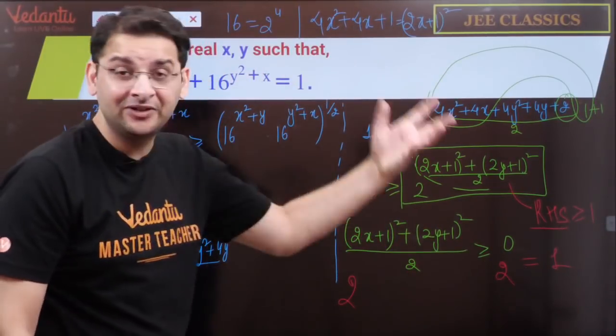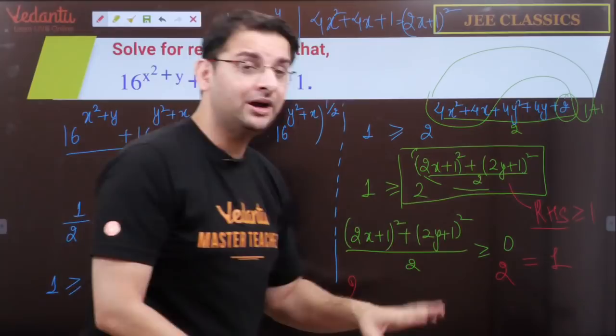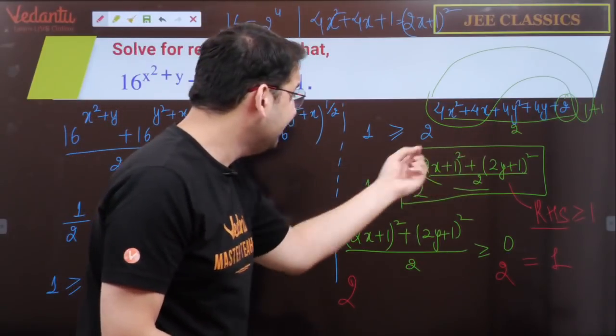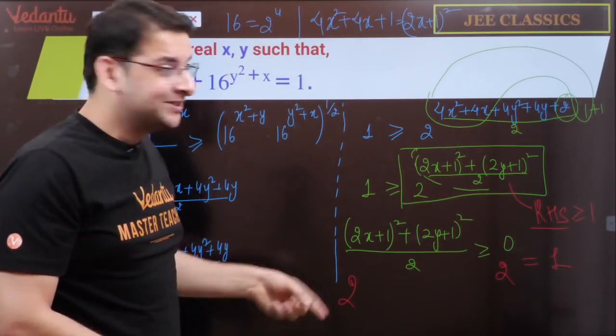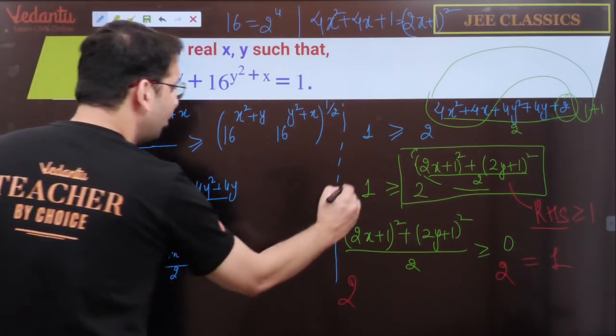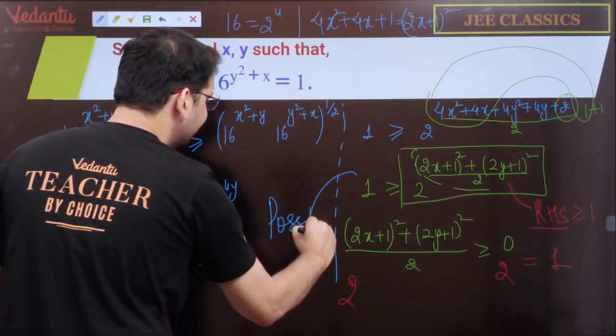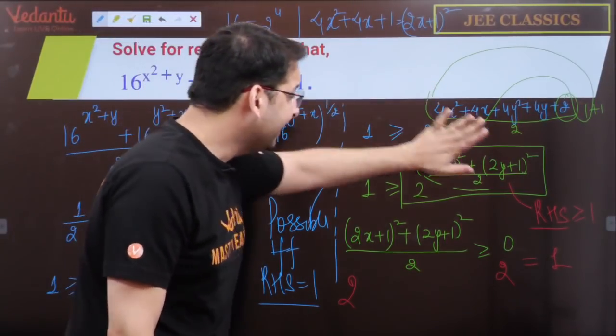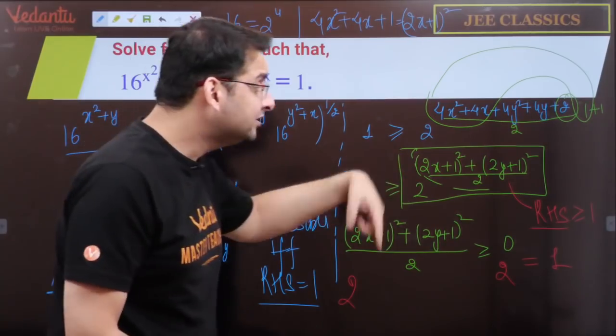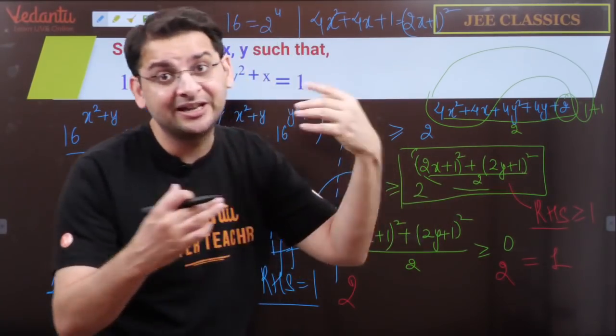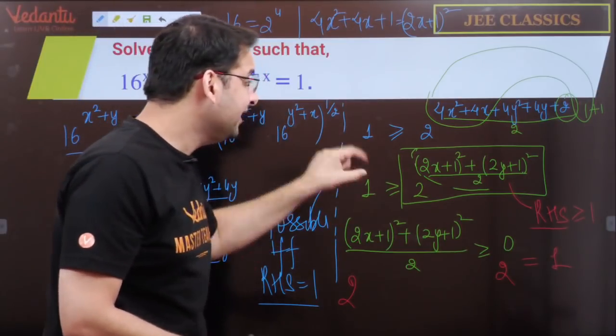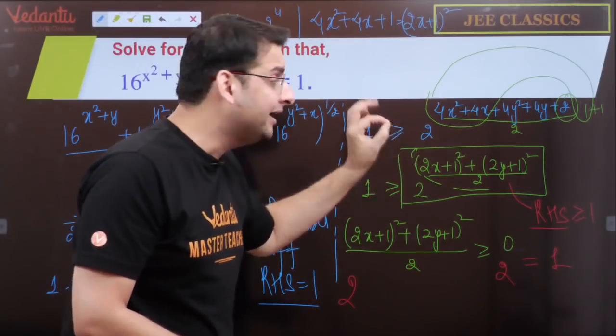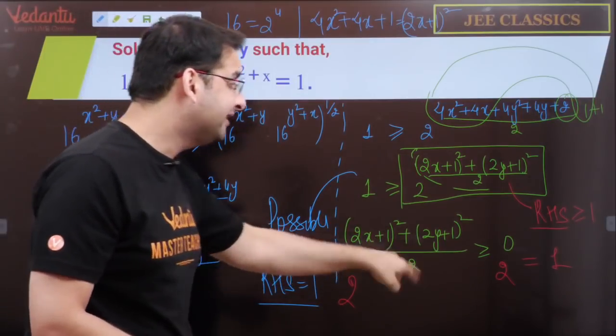So the right hand side is always greater than or equal to 1. This can never be less than 1. The minimum value is 1, which happens only when both are zero. Otherwise the right hand side is always greater than or equal to 1. But the question says the right hand side is less than or equal to 1. This is possible when the right hand side is exactly equal to 1. When will the right hand side be 1?